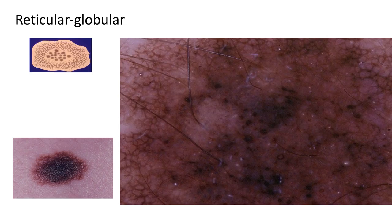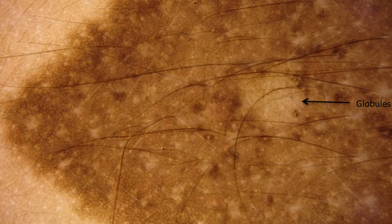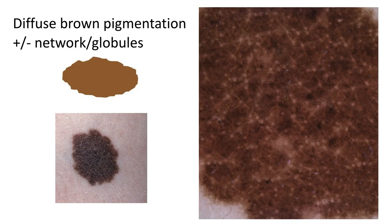Another example of these angulated brown cobblestone globules. The reticular-globular pattern most frequently is seen with peripheral network and central globules, such as this example. Another example of a beautiful small congenital nevus shows peripheral network and in the center small brown globules. Here we see a predominantly reticular pattern, but in the center a small collection of cobblestone globules.